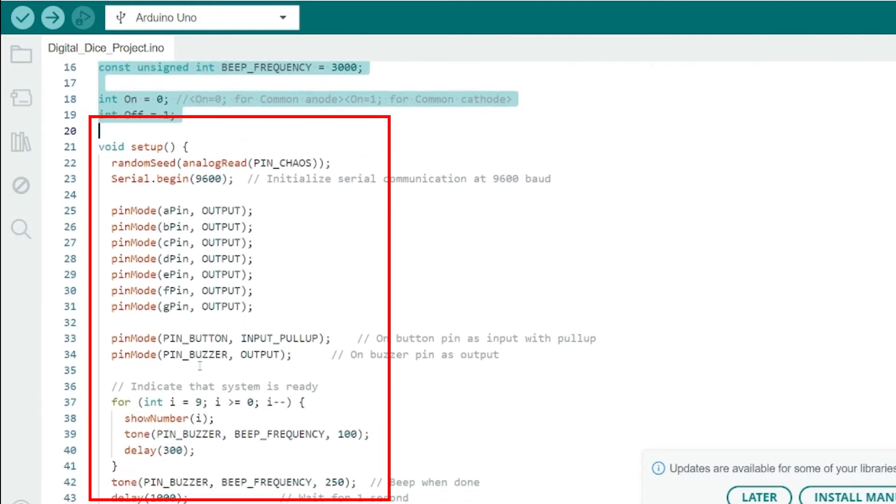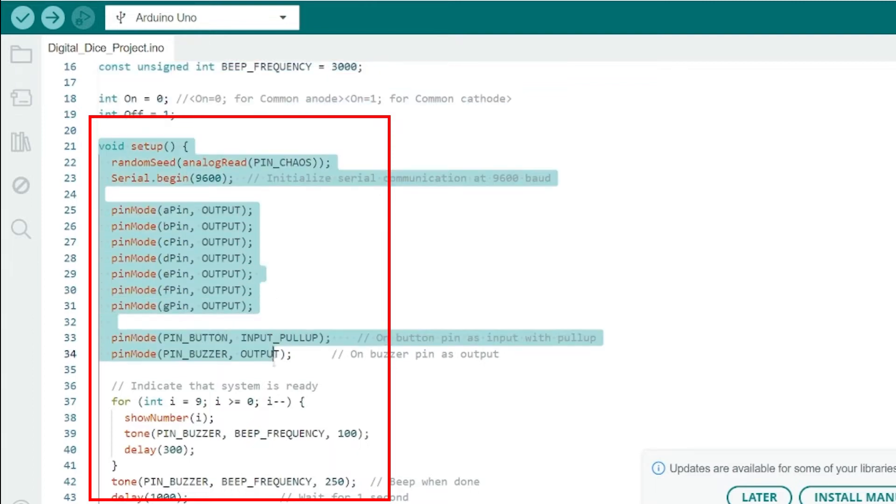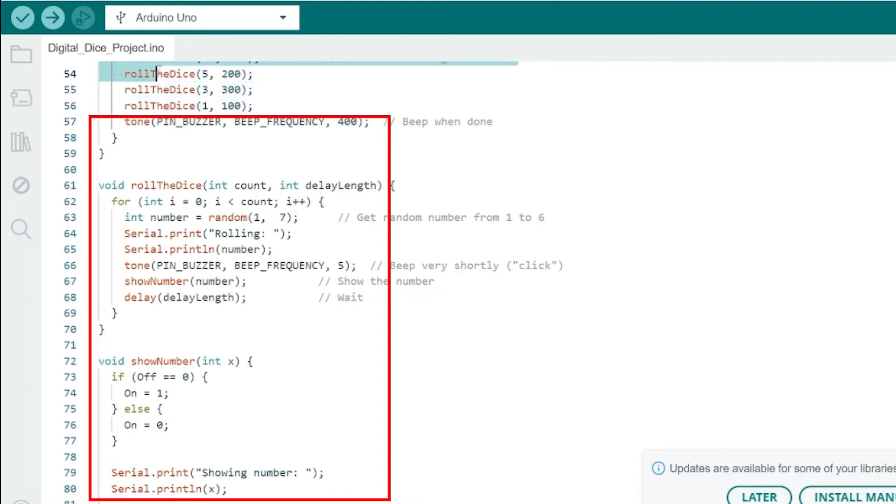In the setup function we initialize the random number generator using the analog pin, start serial communication, and set the pin modes for our components.